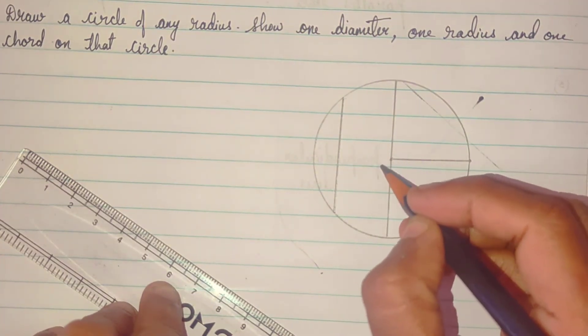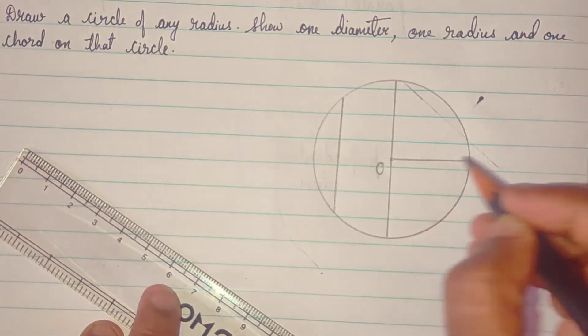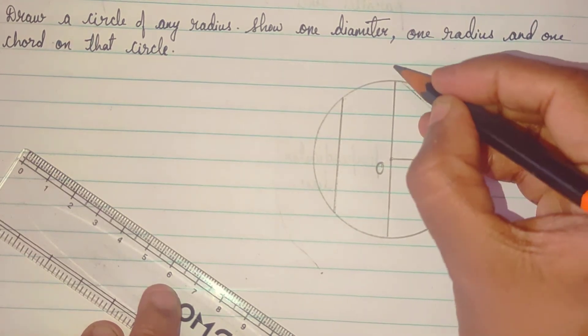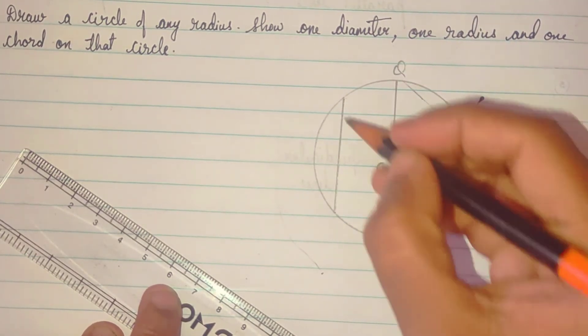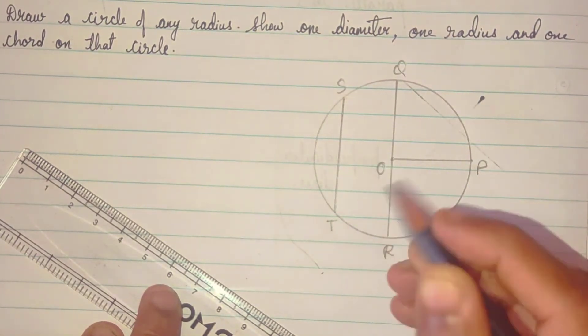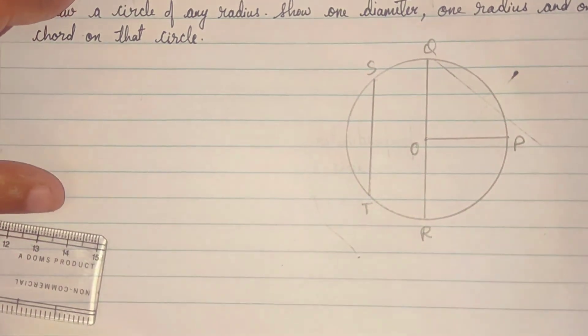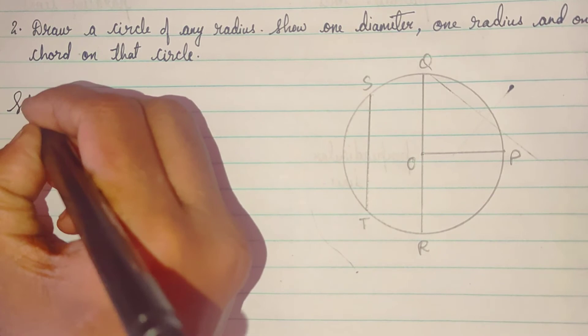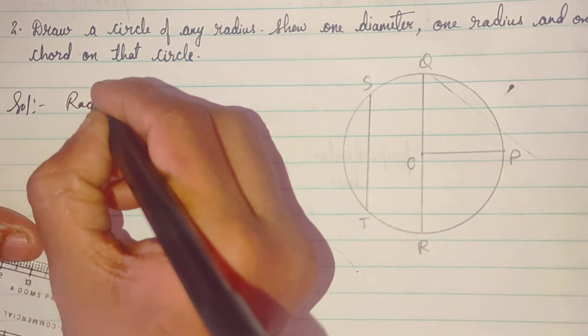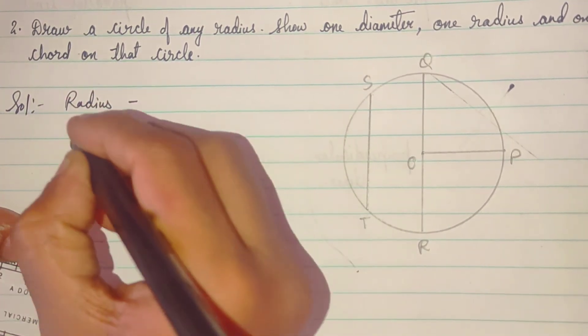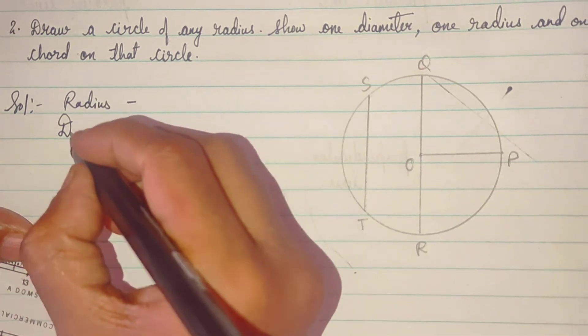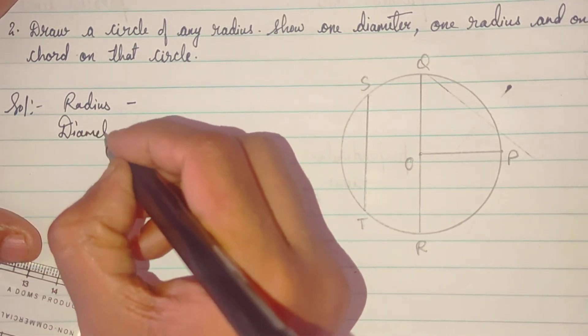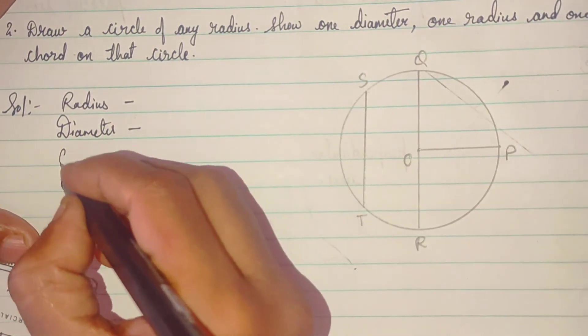So, this is O, P, Q, R, S, T. So, simply, you will write answer, solution, radius, diameter, and chord.